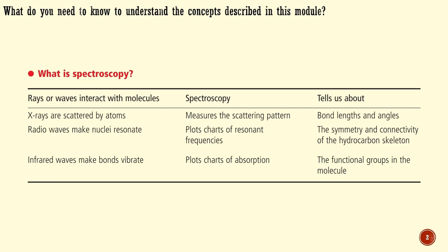Make no mistake about these important points — we really do know what shape molecules have. You would not be far wrong if you said that the single most important development in organic chemistry in modern times is the certainty, as well as the speed with which we can be certain about the structure of newly developed organic compounds. What has caused this revolution can be stated in a word: spectroscopy.